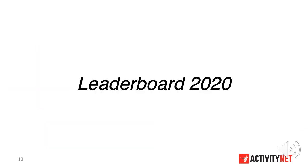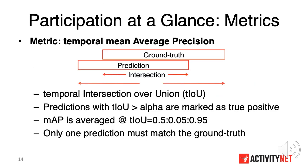Now let's see the submissions from this year. Our server evaluates submissions by temporal mean average precision. For any prediction in the submission file, it is marked as positive if the temporal IoU is greater than some threshold alpha; otherwise, it is considered a false positive. We average the mean average precision at 10 different alpha values from 0.5 to 0.95. Also, only one prediction must match with the ground truth, meaning we penalize duplicate predictions at evaluation time.